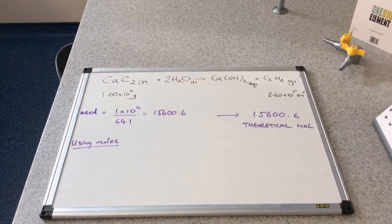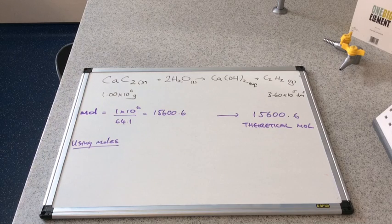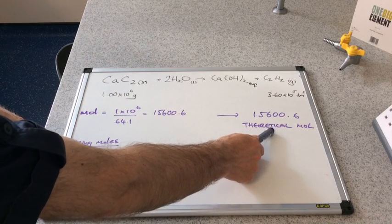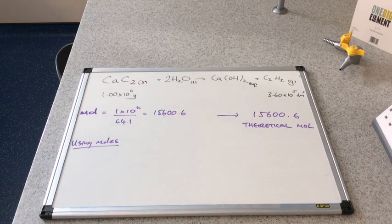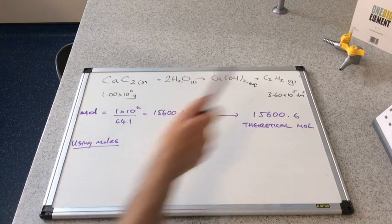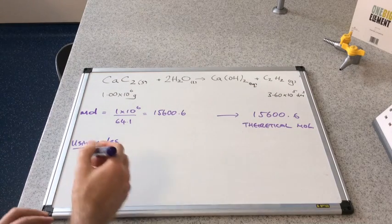Again we've got a choice of method now. The first method I'm going to show you is by using the moles. We've just calculated the theoretical moles. We now need to work out what are the actual moles of gas produced. We're given this volume here.